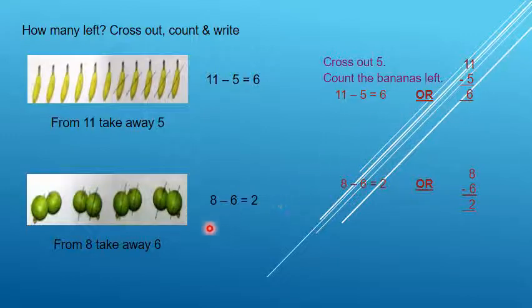Next. From 8, take away 6. Means, now here you have to subtract 6 guavas from 8 guavas. So, I cross out 6 guavas. 1, 2, 3, 4, 5 and 6. So, how many left? 1 and 2.